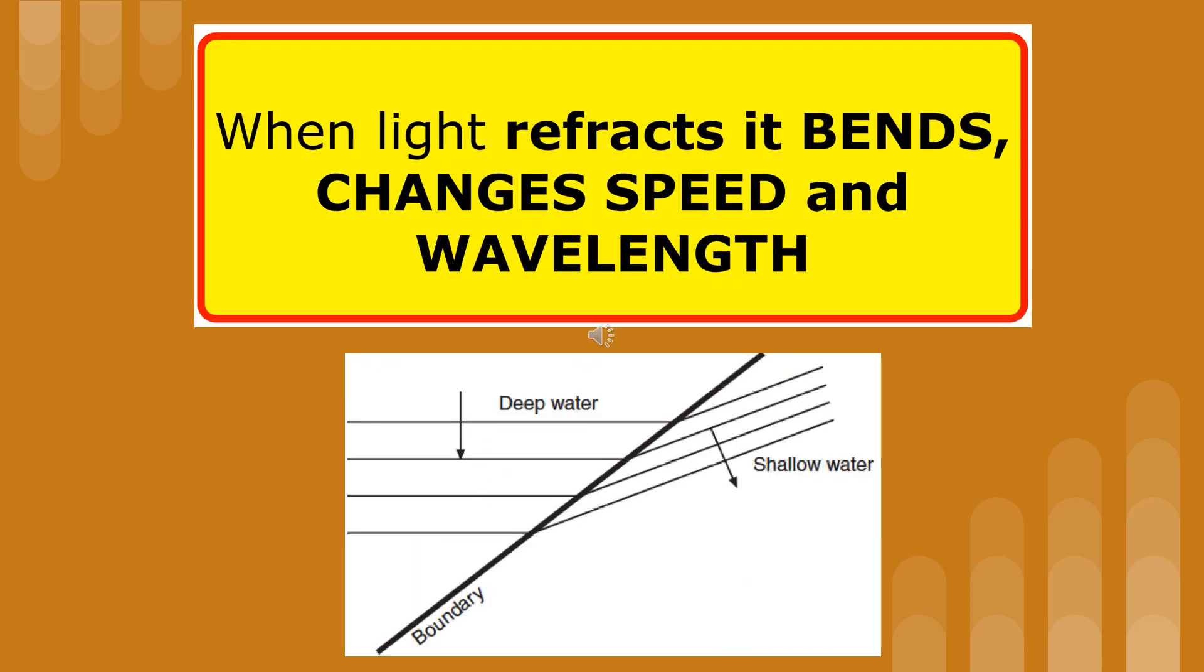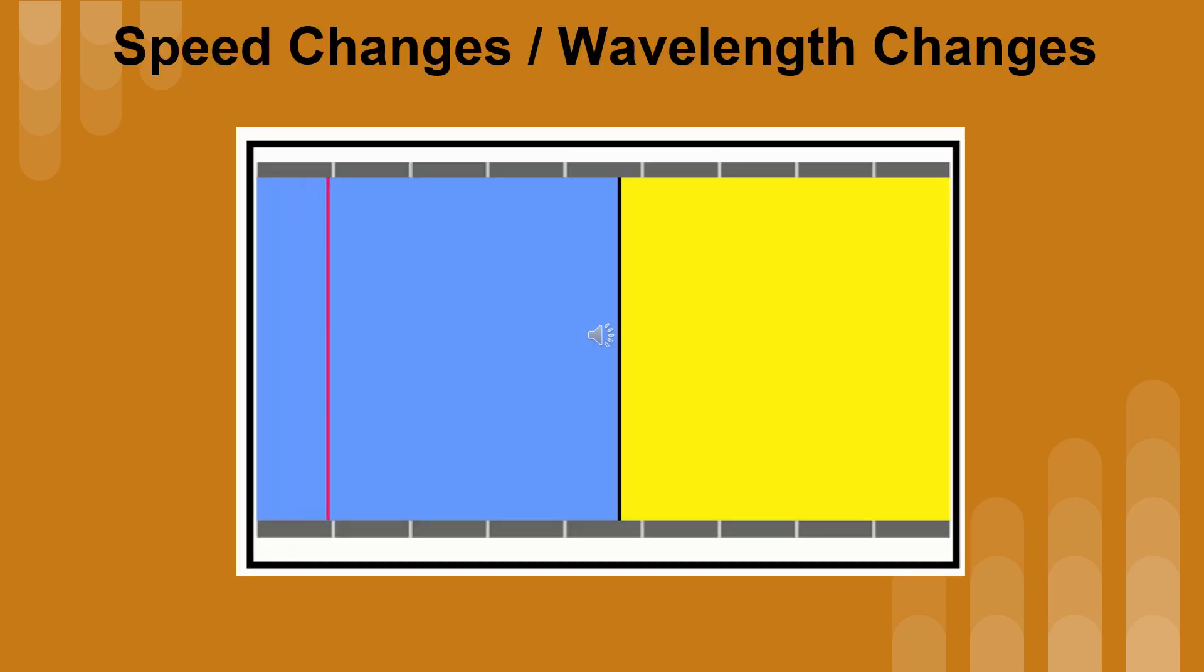When light refracts, it bends, changes speed, and wavelength. Since the wavelength in the second medium is smaller, the second medium is slower. When the speed of a wave changes, so does its wavelength. The change in speed is proportional to the change in its wavelength.